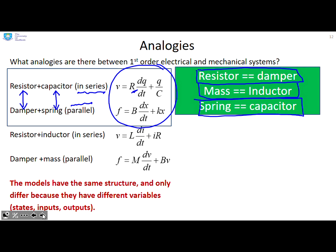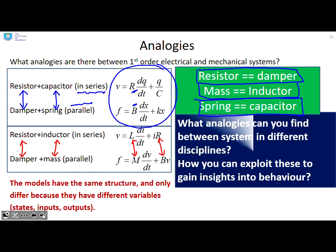There is resistance parameter in the same position as the damping parameter and so on. Now similarly, if we look at these two below, the resistor inductor and the damper mass, you can see a resistor analogous to a damper and an inductor analogous to a mass. And again, if you look at the parameters, you see the key parameters appear in the same position in the equations. So a question for you, what analogies can you find between systems in different disciplines? And how might you exploit these to gain insights into how systems behave?